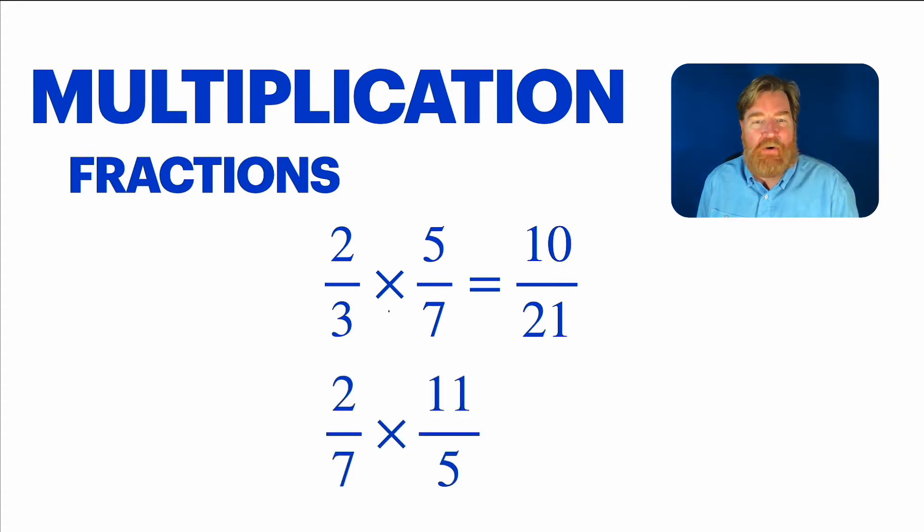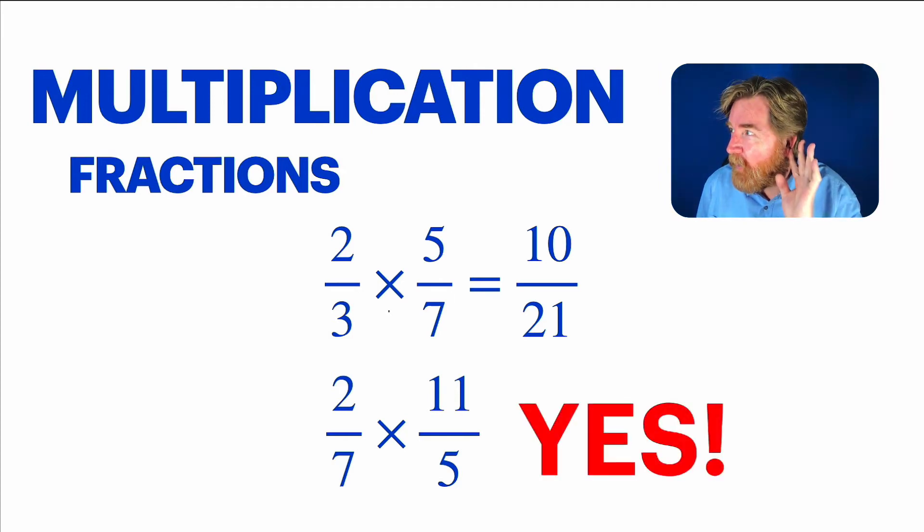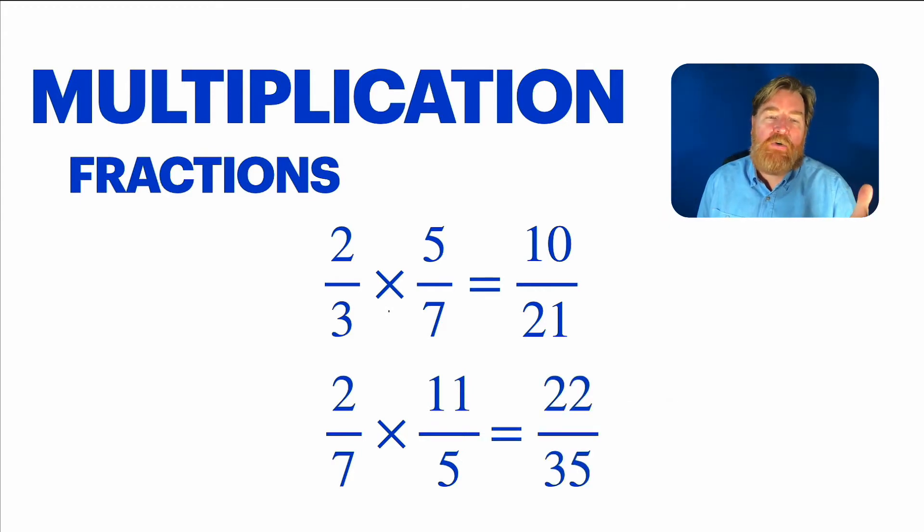Here's another one, just to make sure. Can we multiply sevenths and fifths? Yes. Good. Of course. Anything by anything. Just multiplying straight across. Twenty-two, thirty-fifths. Two times eleven, and seven times five. Could it get any better than that?